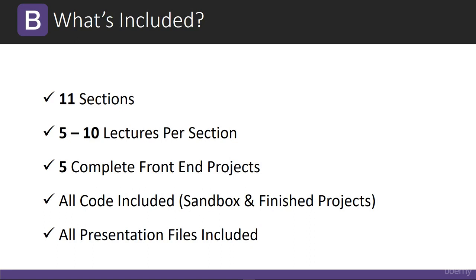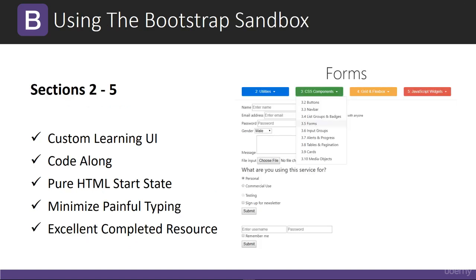We have 11 sections in this course with 5 to 10 lectures per section. The first five sections are going to be basic learning sections — looking at the framework, utilities, CSS components, and things like that. We're going to be using something called the Bootstrap Sandbox, and then the rest are going to be project-based sections. All the code will be included. We're going to be using a custom learning UI that I built completely in HTML, with a file for every learning section.